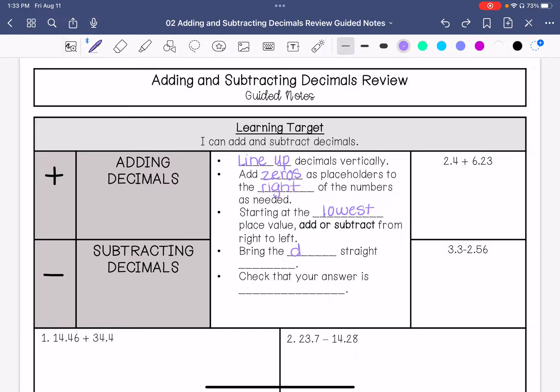Bring the decimal straight down. And then check that your answer is reasonable. For example, if you were doing 10 minus 3, you were not going to get 157. That doesn't make any sense.